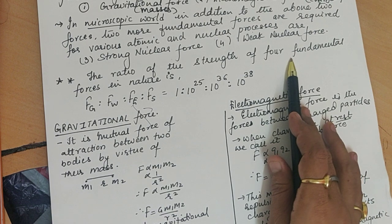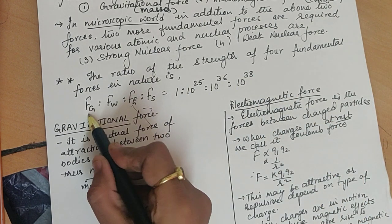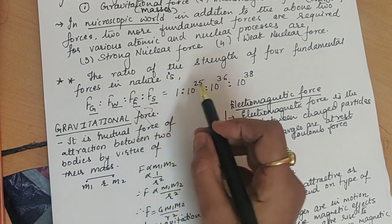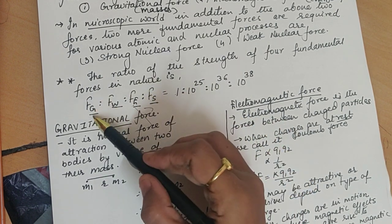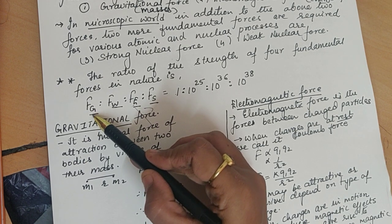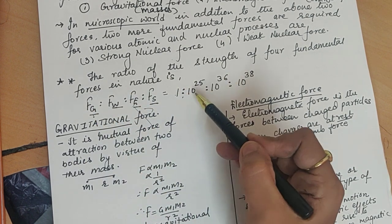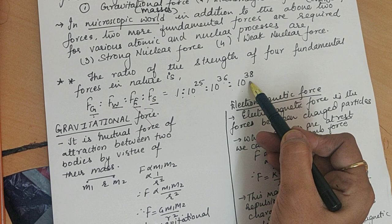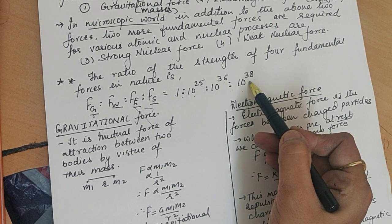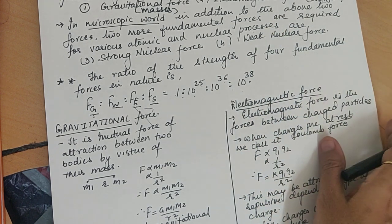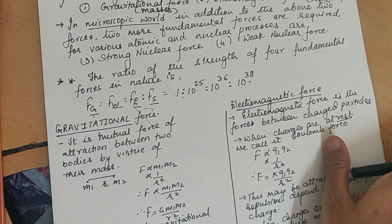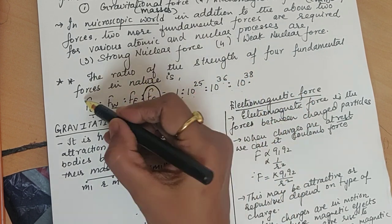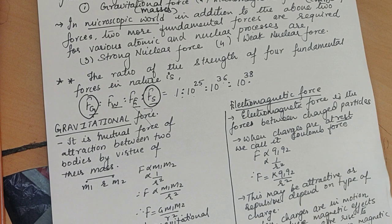The four fundamental forces are: gravitational force, weak nuclear force, electromagnetic force, and strong nuclear force. Their relative strengths, taking gravitational force as reference (ratio 1), are: 1 : 10²⁵ : 10³⁶ : 10³⁸. This means gravitational force is the weakest of all fundamental forces, and strong nuclear force is the strongest.